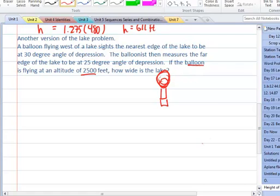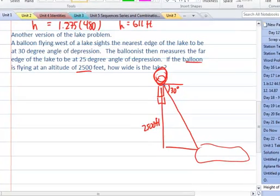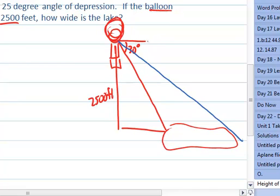Here is the lake and it's flying at an altitude of 2,500 feet. So it sights the first edge of the lake with an angle of depression to be 30 degrees. And then it sights the other edge of the lake at an angle of depression to be 25 degrees. So can you find the width of the lake?